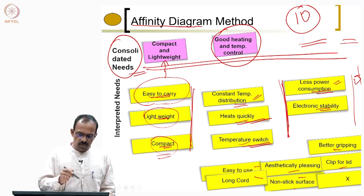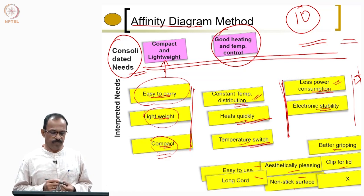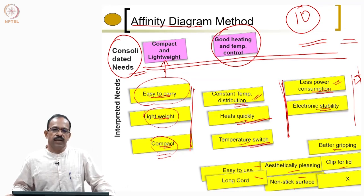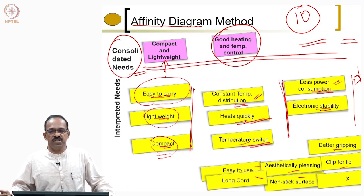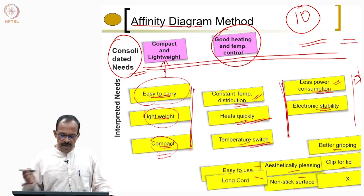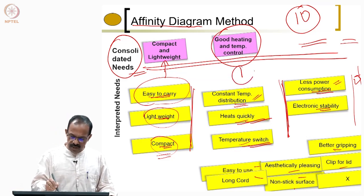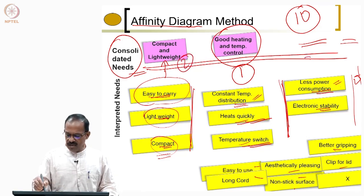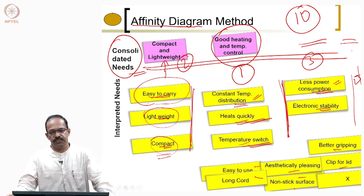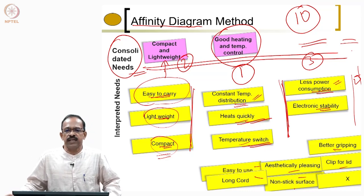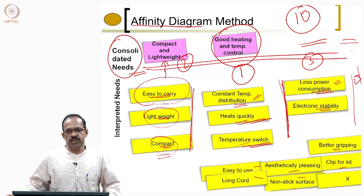This is the requirement of customer need analysis — you start with raw data from the customer, convert it to interpreted needs, sort and categorize them, and find out the consolidated needs. While you do this, you will also try to find out the importance of these needs — which need is the most important one. This is a decision to be taken by the design team based on the information collected from the customer. At the end of this analysis, what you get is a consolidated list of needs along with their importance.